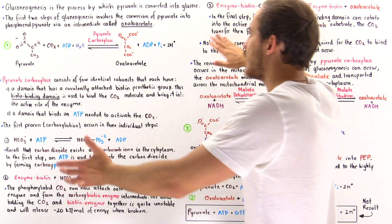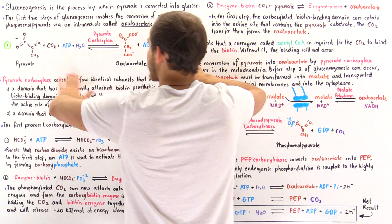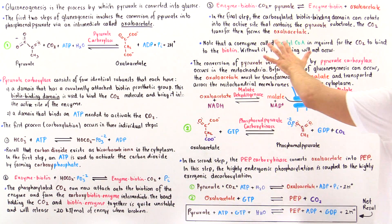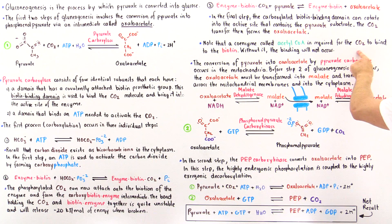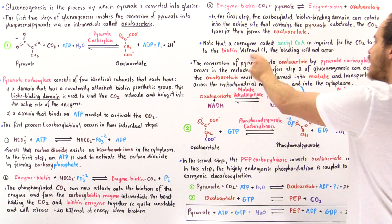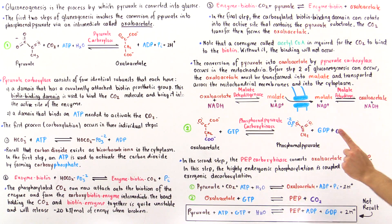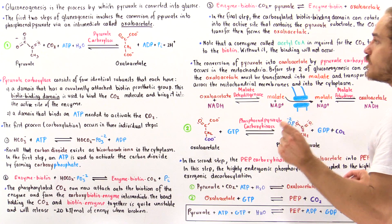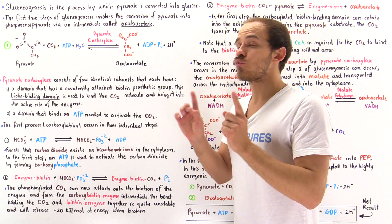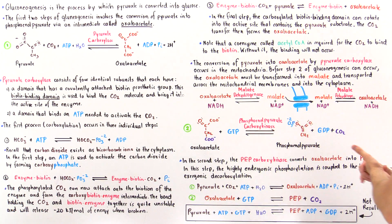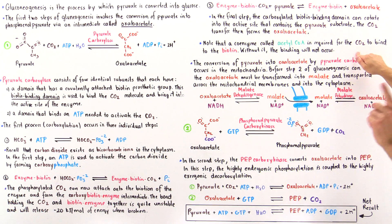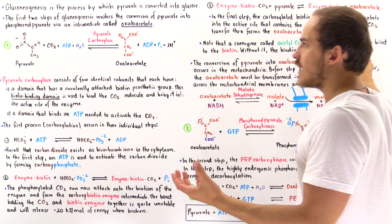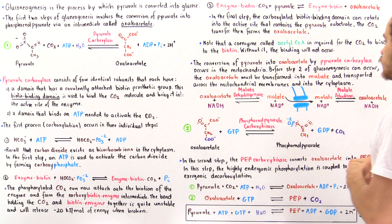Summing up these reactions, we get a net reaction where pyruvate is carboxylated to form oxaloacetate. The coenzyme acetyl-CoA is required for CO2 to bind to the biotin — without it, that binding will not take place. As we'll discuss in a future lecture, this actually creates a very important regulatory point for the process of gluconeogenesis, so remember this point.